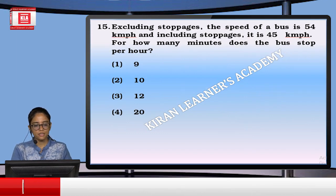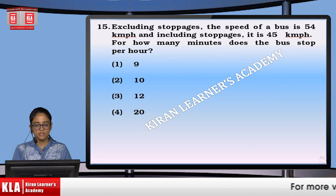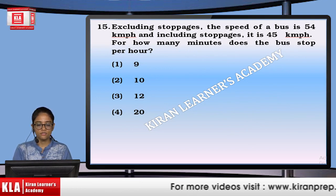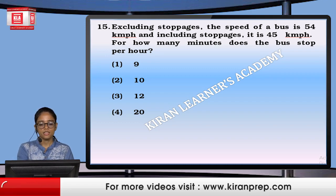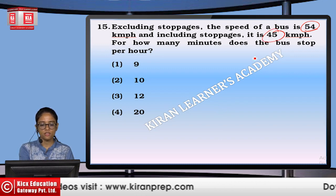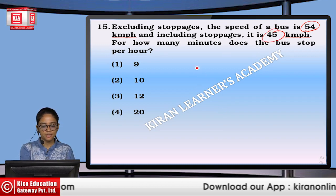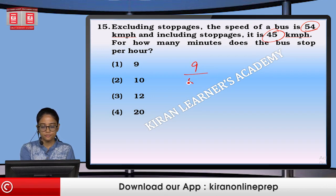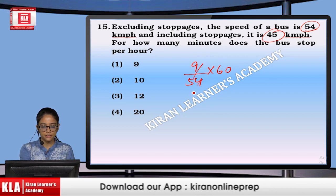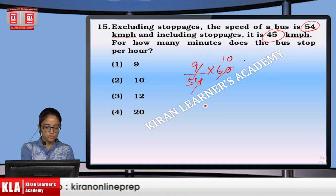Excluding stoppages, the speed of the bus is 54 km/h, and including stoppages it is 45 km/h. For how many minutes does the bus stop per hour? The difference is 9 km/h. Calculating the stoppage time: it comes to 10 minutes. Option number 2.